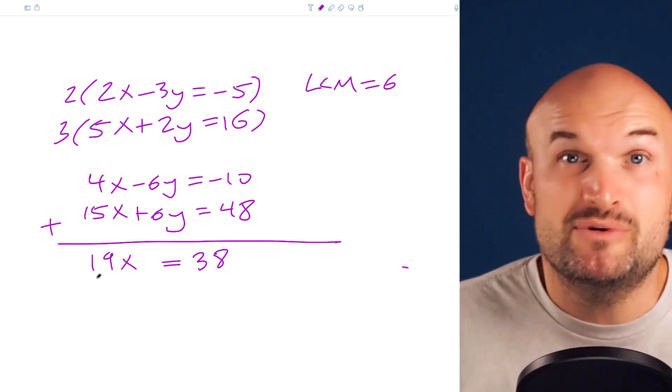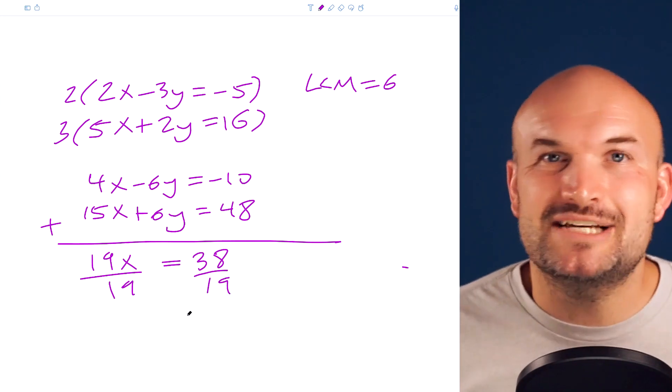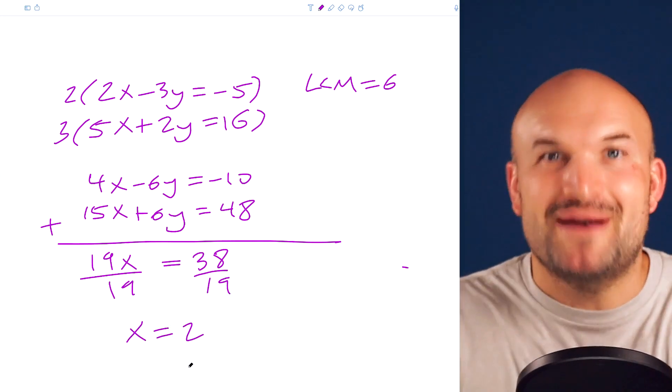That would look just like this. The students would solve for x, they would divide by 19 on both sides and get an x equals 2. And then they say, hey, I'm done. And they go off on their merry way.